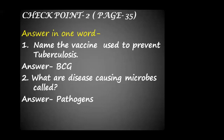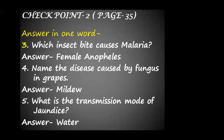Let's move to checkpoint 2 given in page number 35. Answer in one word. Name the vaccine used to prevent tuberculosis. The answer is BCG vaccination. Question number 2: what are disease-causing microbes called? The disease-causing microbes are called pathogens. Third question: which insect bite causes malaria? The answer is female Anopheles mosquito's bite causes malaria. Question number 4: name the disease caused by fungus in grapes. The answer is mildew.